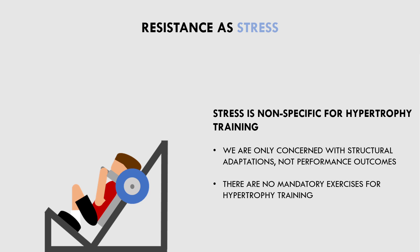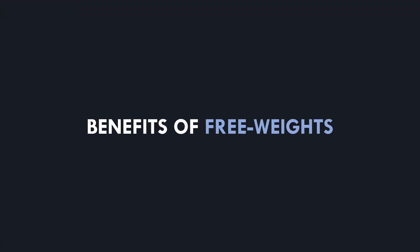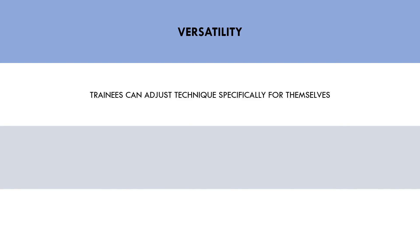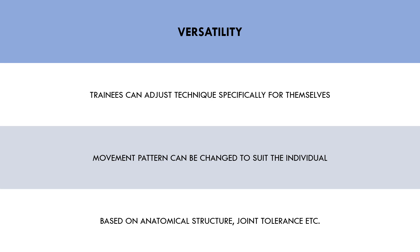Let's now cover what unique benefits free weights have over machines. The first primary benefit is versatility. Free weights can freely move in any direction, which means trainees can adjust how the lift is performed to make it more effective. While machines often allow you to adjust some things like seat position, the movement pattern is ultimately fixed and cannot be changed. The movement pattern can be adjusted in hundreds of different ways with free weight lifts to suit the individual. Each trainee is slightly unique, and with free weights, trainees can adjust technique based on anatomical structure and joint tolerance to make it maximally effective for them.